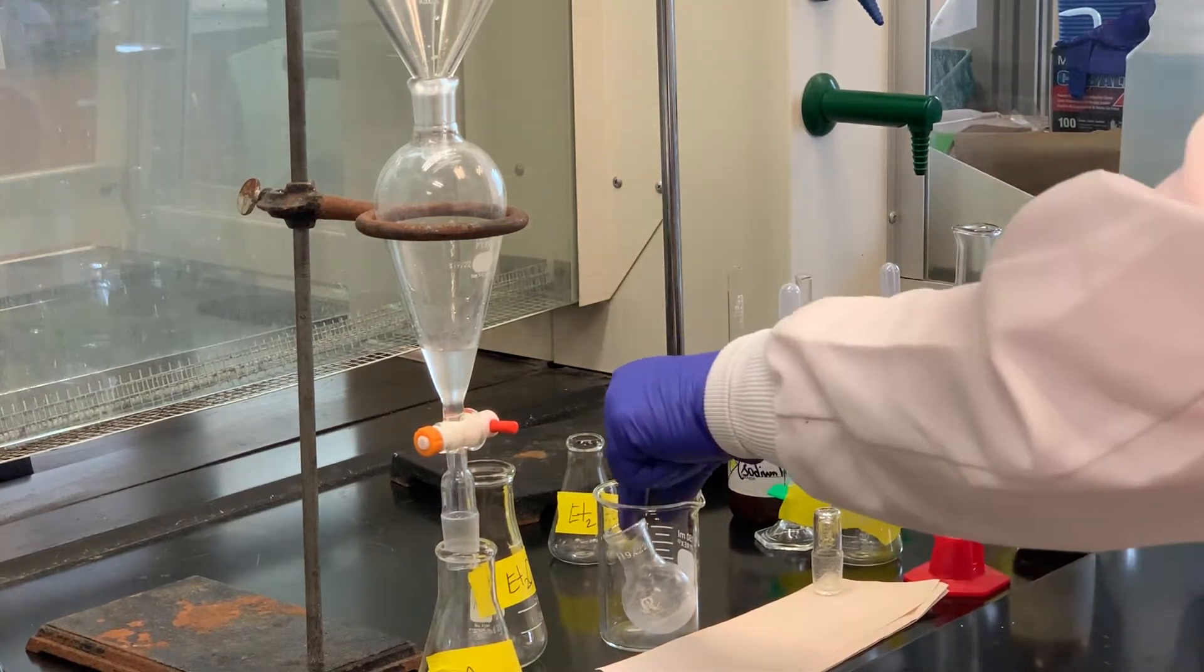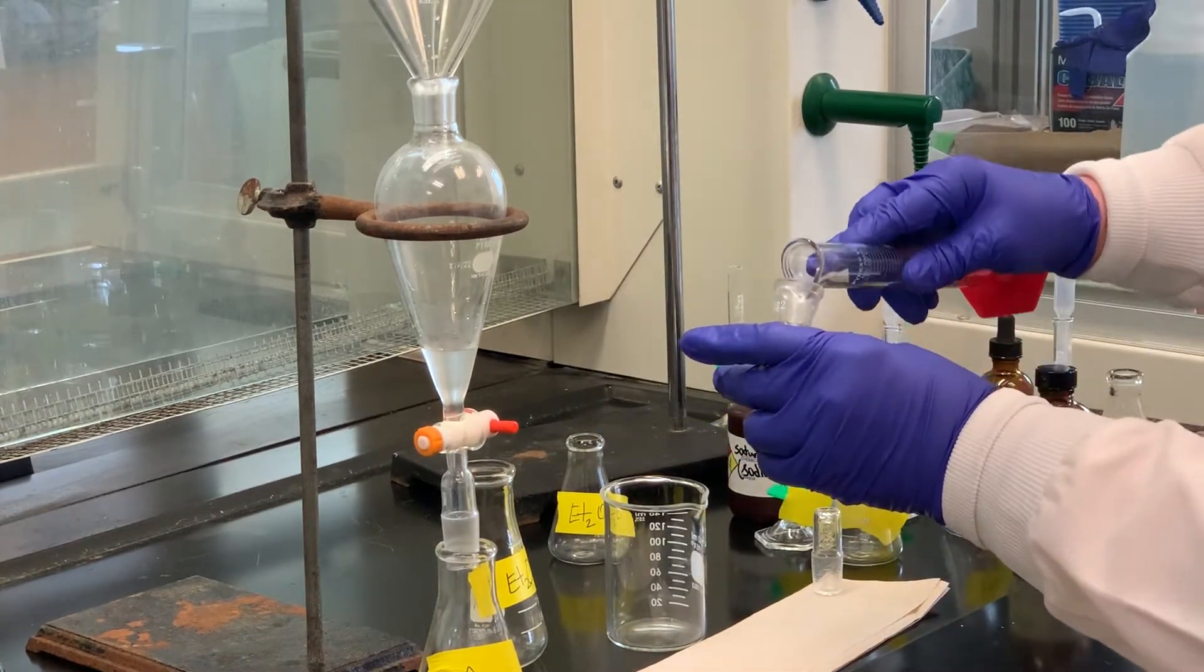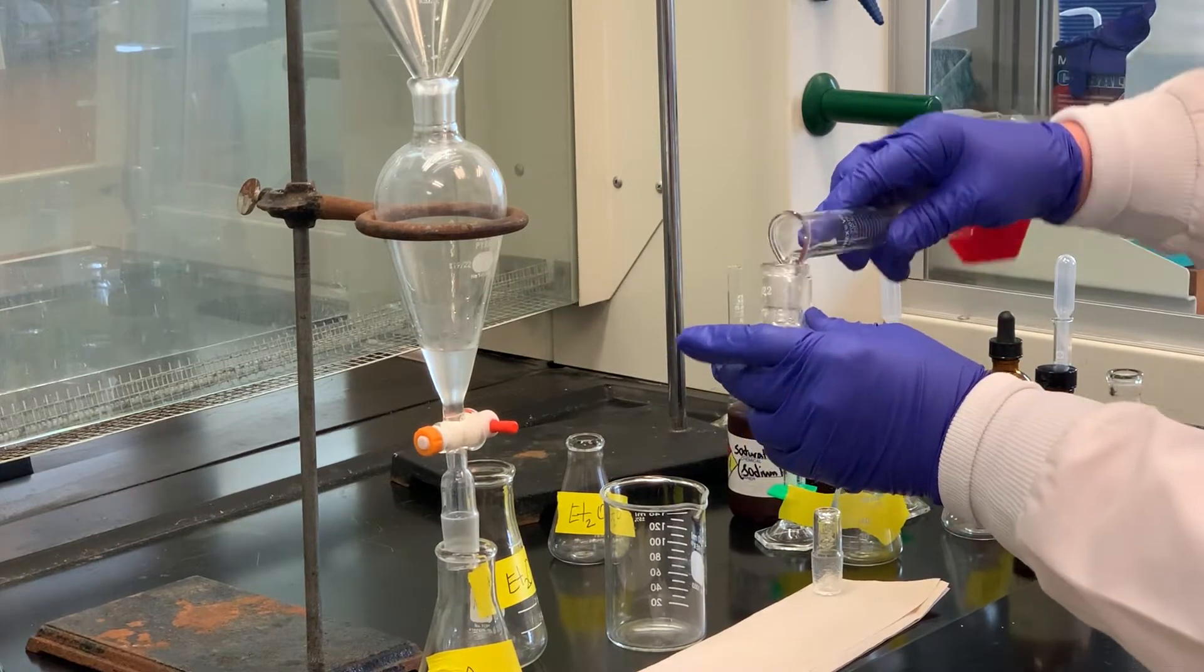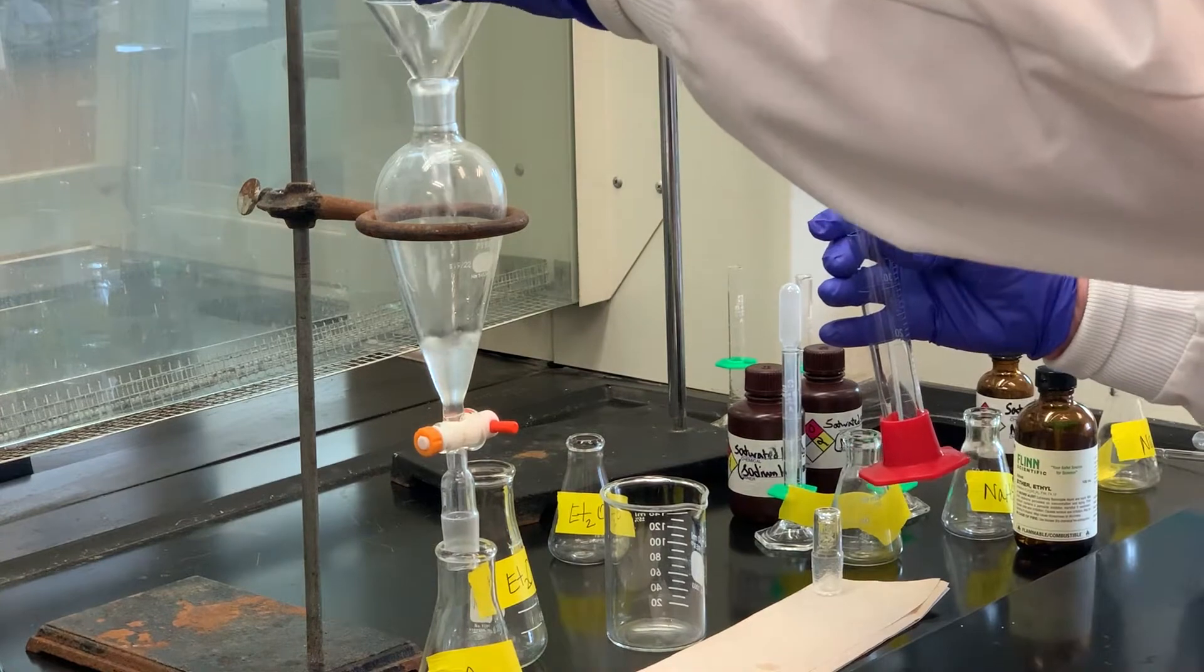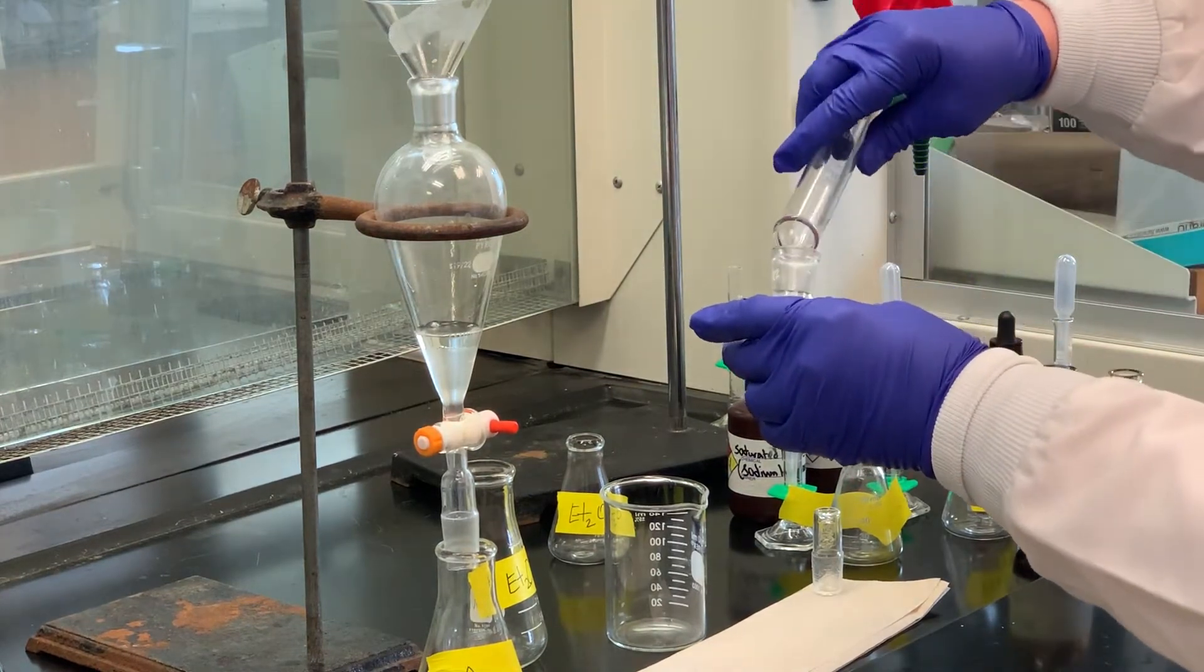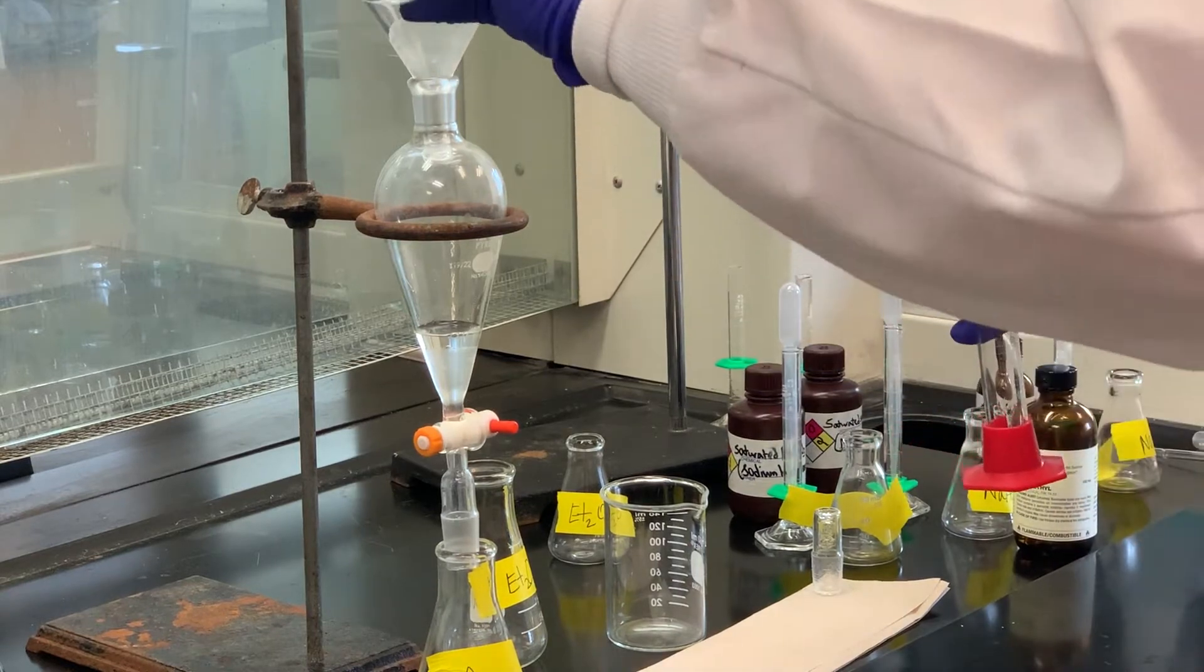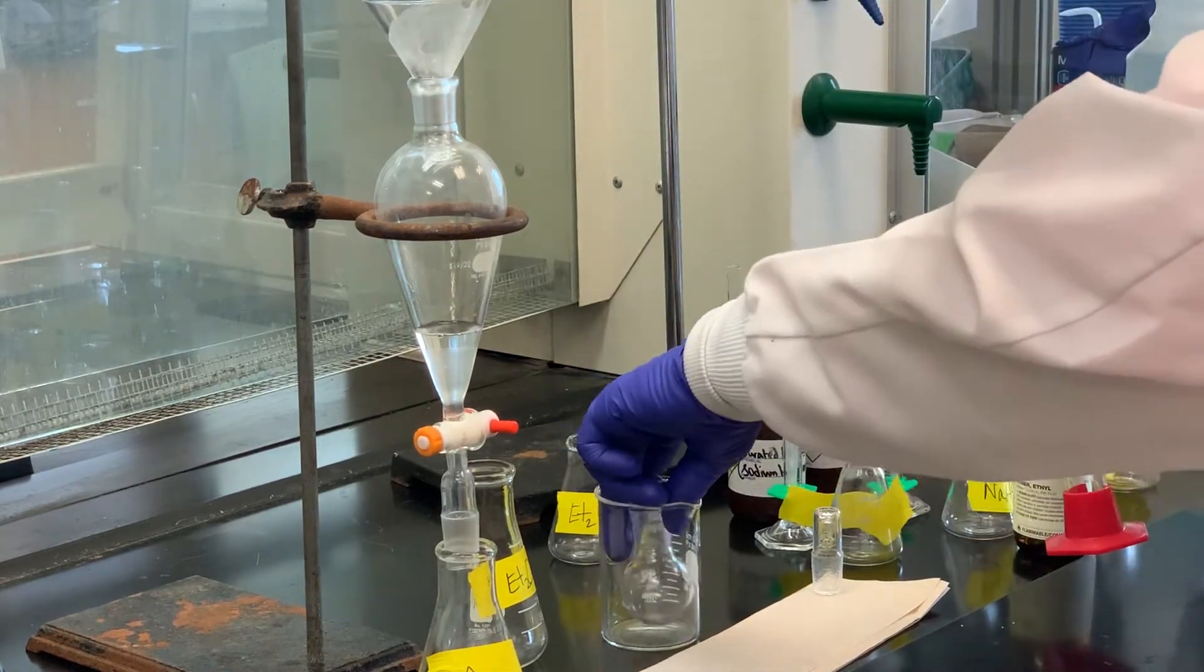And I think what would also be good is because I have some product that crystallized as soon as I poured it into the separatory funnel, so I'm going to use the ether to wash that out as well. All right, so I'm done with that round bottom flask.